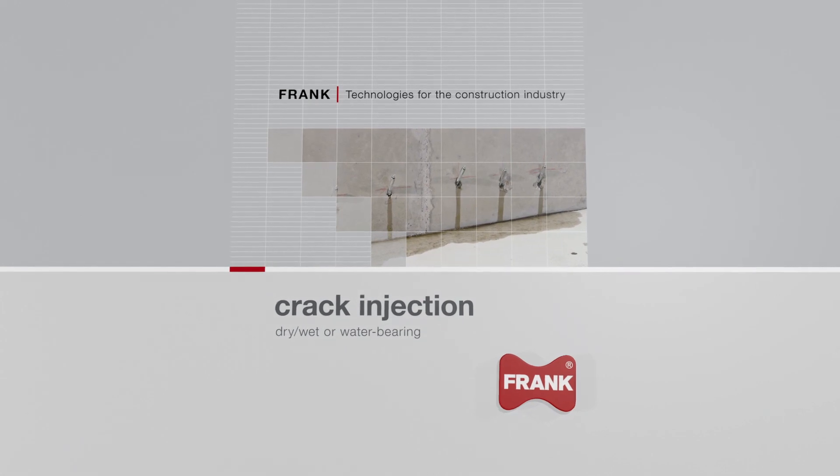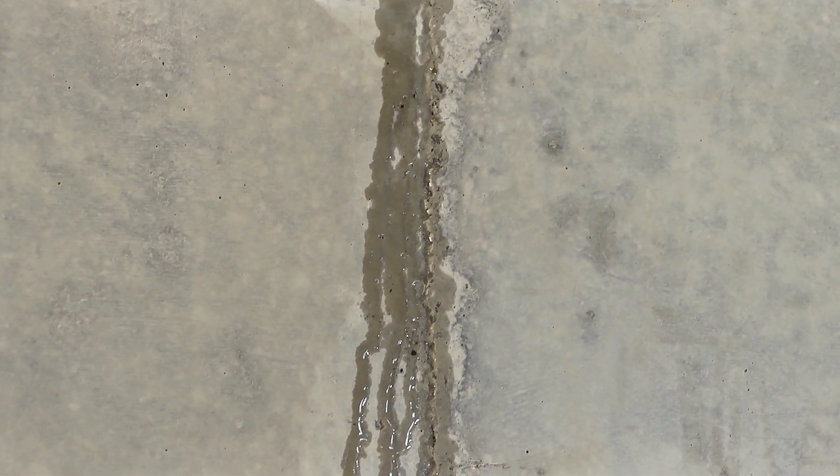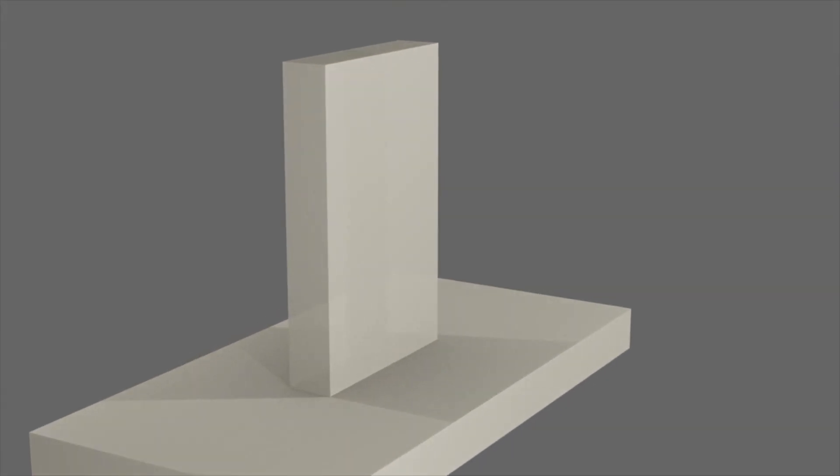Normal methods of concrete construction require construction or day joints which in the finished structure can be a source of leaks. When structural cracking does occur, remedial measures will be necessary and joint or crack sealing needs to be performed.